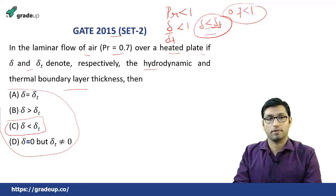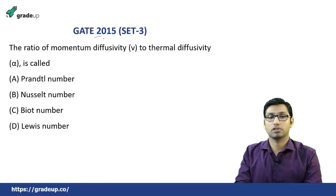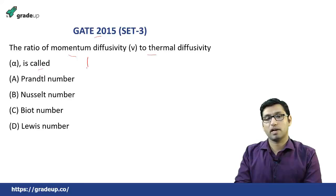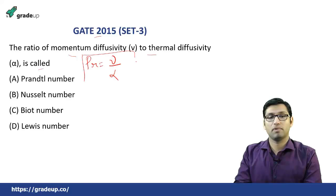Moving on to the next question from GATE 2015 Set 3. This question says: the ratio of momentum diffusivity over thermal diffusivity is called what? This was a very easy question. We know that the Prandtl number equals the ratio of momentum diffusivity over thermal diffusivity. So option A is the correct answer.